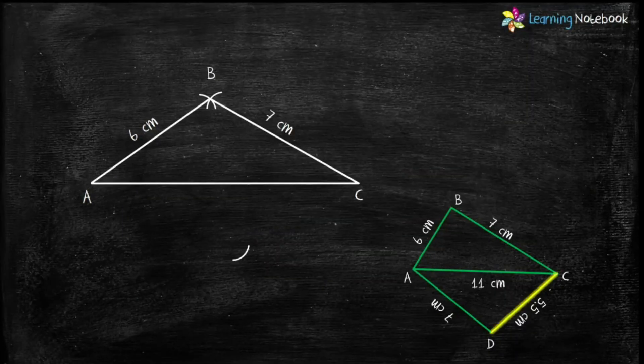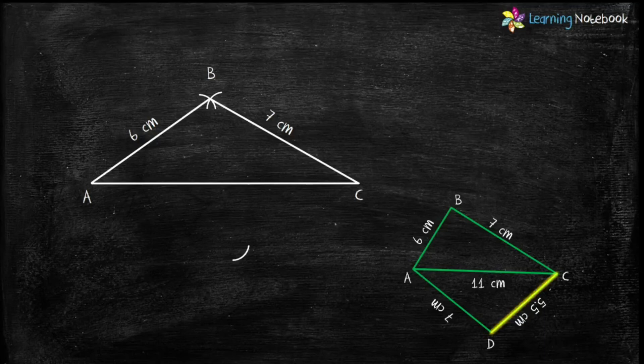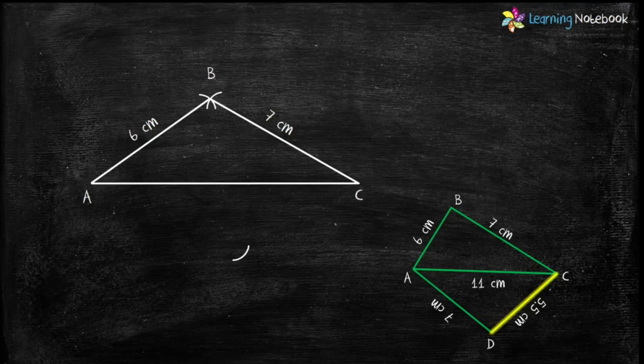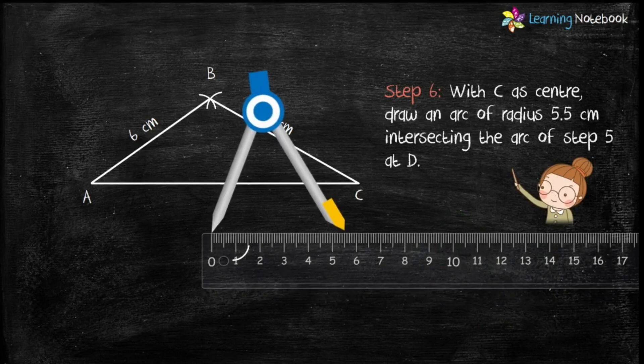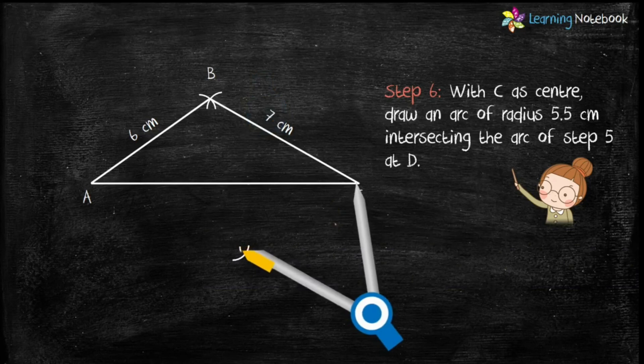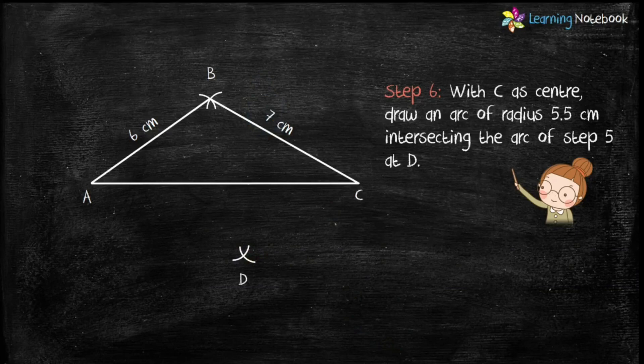Now students, in next step, let's construct DC which is given as 5.5 cm. So, for step 6, open the compass with radius 5.5 cm and with C as center, draw an arc. This arc will intersect the arc of step 5 at point D.